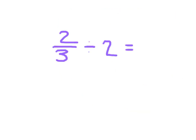Here we have the problem 2 thirds divided by 2. Again, we're going to rewrite this — rewrite that divided by 2 as a multiplication, and we're multiplying by the inverse of 2, which is 1 half. 2 is just 2 over 1, so inverting it, we get 1 half.